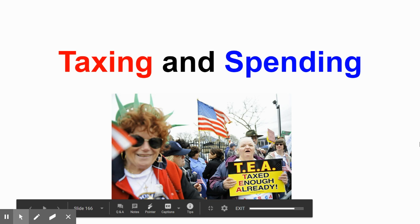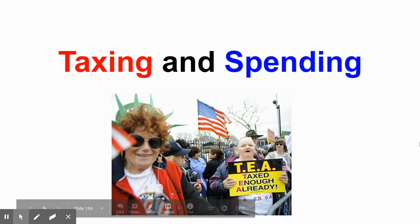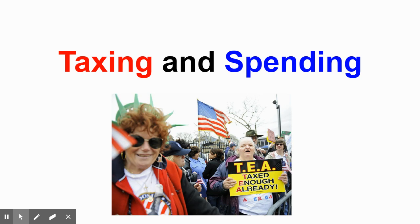When you talk about taxing and spending, we're talking about the basis for how the government uses money. We're going to talk next week about the different forms of taxes and how they can be imposed in different ways to do different things. But in general, we're talking about when a bill is passed into law, the ways that it will both raise money by taxing citizens and spend money in the ways that government spends money.